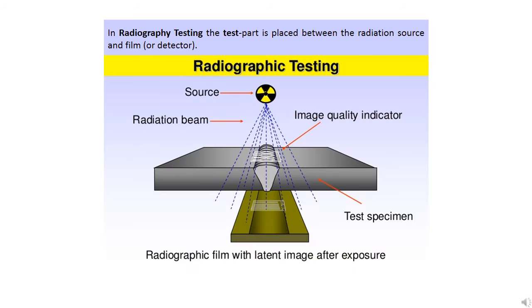In this image through diagram, you can see how radiography testing is carried out. A key point to note is that in radiography testing, the test part is placed between the radiation source and the film or detector.